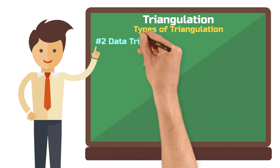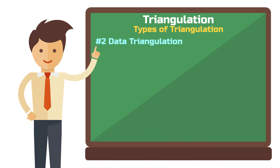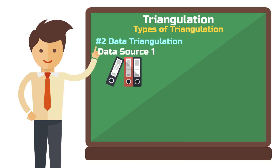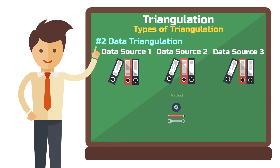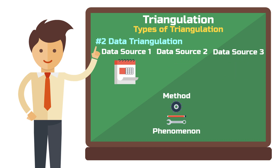Type 2: data triangulation. With this approach, you need different data sources. The method can remain the same, as can the phenomenon that you're investigating. To vary the data sources, you can change time, location, or people. There are almost endless possibilities.